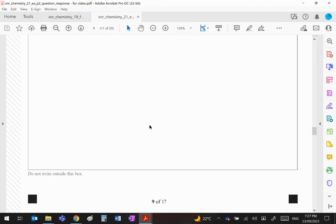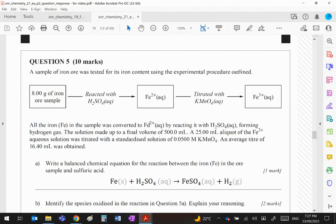I think this is the final question, Question 5. A sample of iron ore was tested for its iron content using this procedure. We take our iron ore sample, react it with sulfuric acid, the Fe becomes Fe2+. This is then titrated with manganate and changed into Fe3+. All the iron samples converted to Fe2+ by reacting and it formed hydrogen gas.